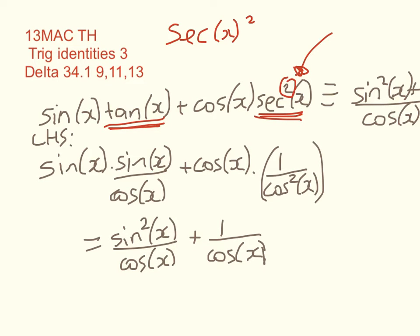Now, I've got a common denominator now. So we're nearly there. So we've got cos of x on the denominator. And on the top line, we've got sin squared of x plus 1. And that is what we were trying to show to start with. So now we write as required.